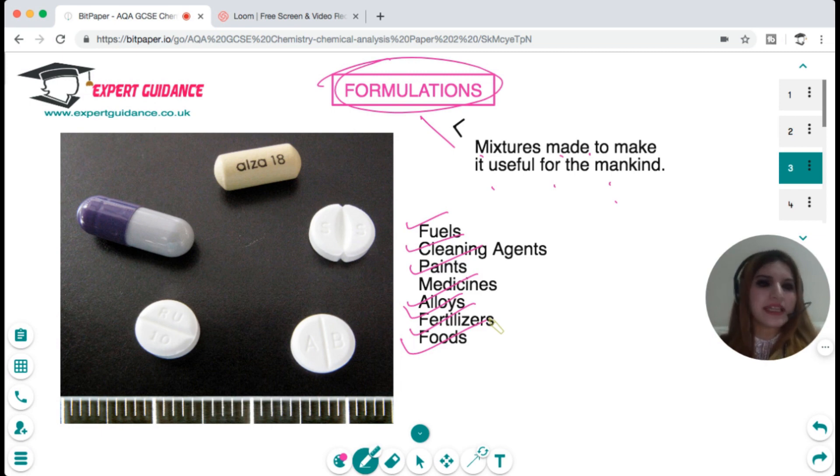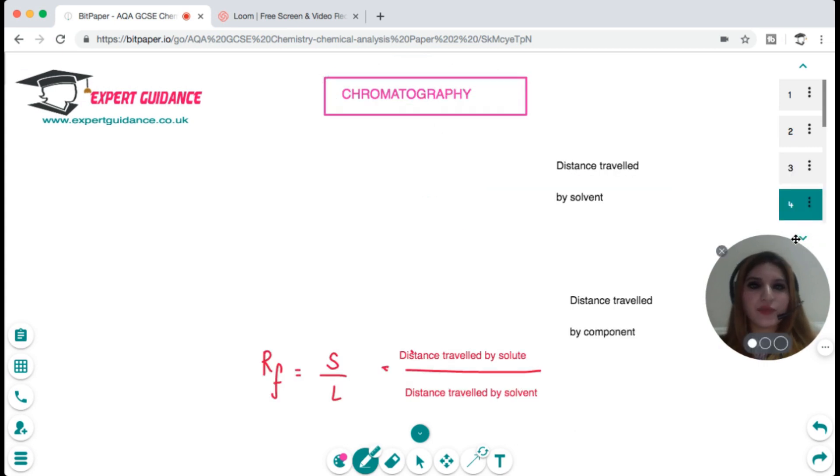Paint has a color, a binder, and a solvent. Fuel is a mixture of different hydrocarbons. Cleaning agents have a base mixed with a water absorbent. Alloys are mixtures of two or more metals. Fertilizers are mixtures of many minerals, and food is a mixture of many components. These are examples of formulations and they're very important for the medical and food industry.